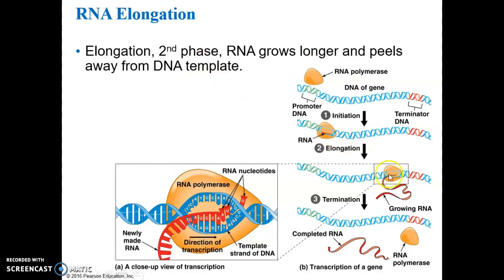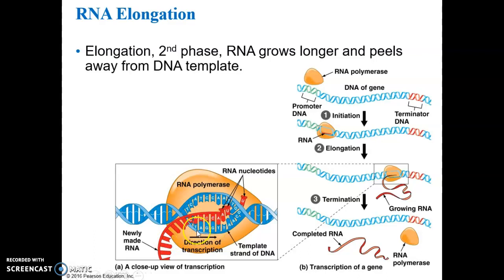The second phase is the elongation of the RNA molecule as nucleotides are added. That's the second phase of transcription - elongation. The RNA molecule grows longer and longer, and eventually peels away and gets detached from the DNA template.